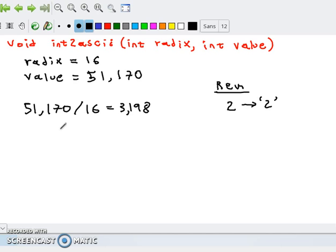Alright, so now we look at this, at the quotient. If it's non-zero, we keep going. We do the same. So 3,198 divided by 16. And that gives you, if you do the math, 199. And the remainder is going to be 14. Now 14, as a character digit, corresponds to E.